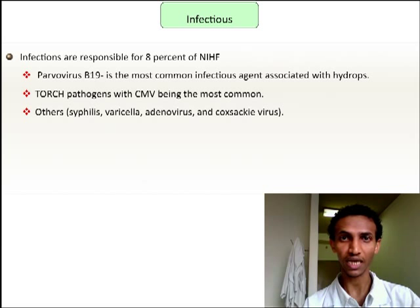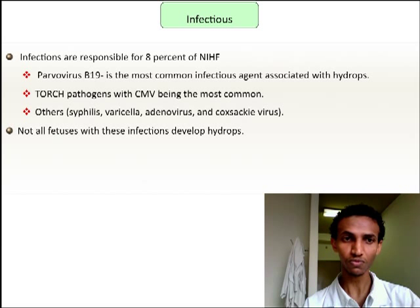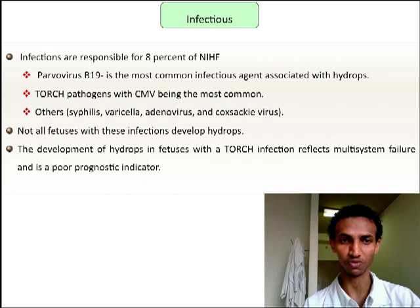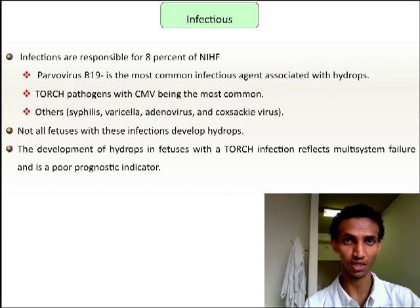Infectious causes of non-immune hydrops fetalis include cytomegalovirus, parvovirus, and TORCH infections. Not all fetuses with these infections will develop hydrops fetalis. The development of hydrops fetalis in the setting of infection reflects multi-systemic failure and is a poor prognostic indicator, as it affects the hematologic system, liver, kidneys, and most organ systems.